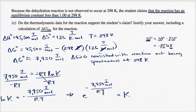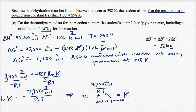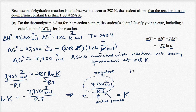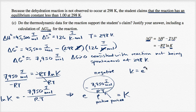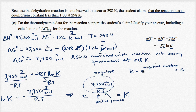What happens when you raise E to a negative exponent? The numerator 7,950 is positive, R is positive, T is 298 Kelvin — positive. So the entire exponent is negative. K equals E to a negative number, which must be less than one. If the exponent is zero, E to the zero power is one. E to anything positive is greater than one, and E to anything negative is less than one — but not less than zero. So this already validates the student's claim that K is less than one.